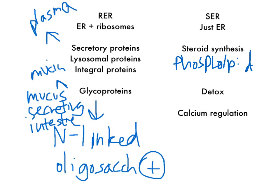What are some organs that have a lot to do with steroid synthesis? We have the adrenal glands — when ACTH hits them, they make steroids. We also have the gonads, which make testosterone among other hormones. So the adrenal glands and the gonads are two places of steroid synthesis, and we'd expect them to be rich in SER.